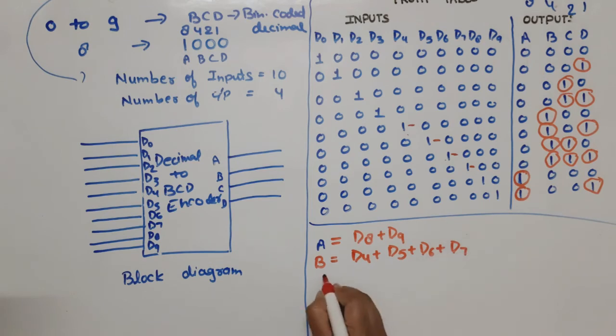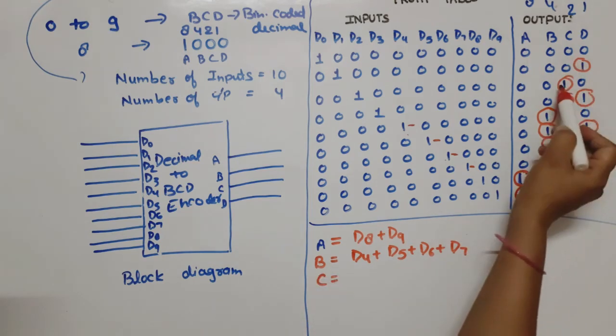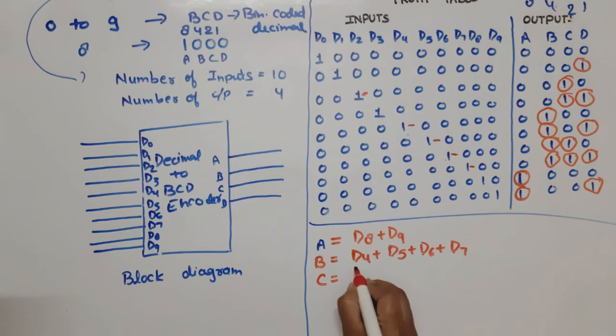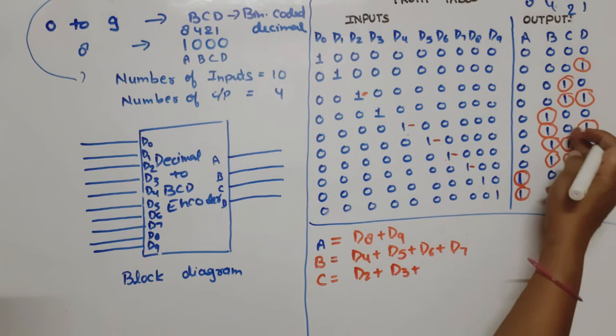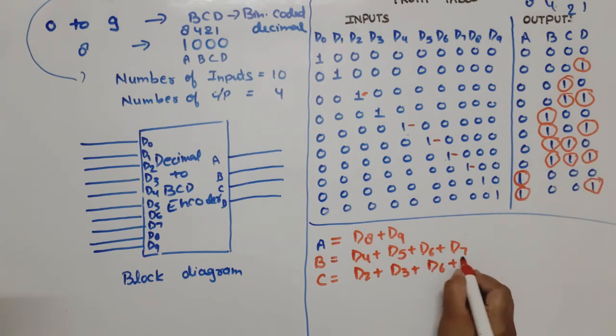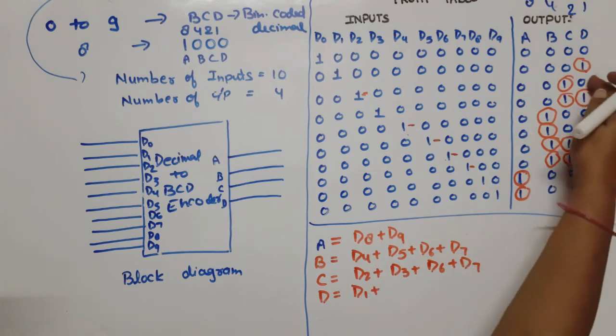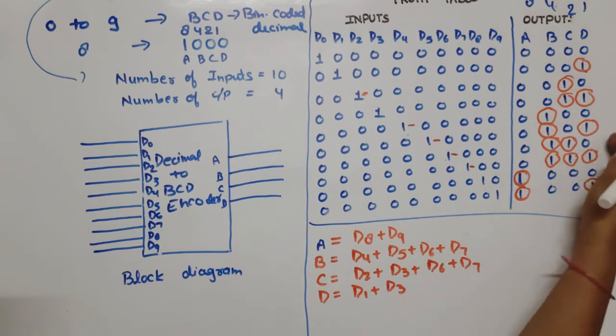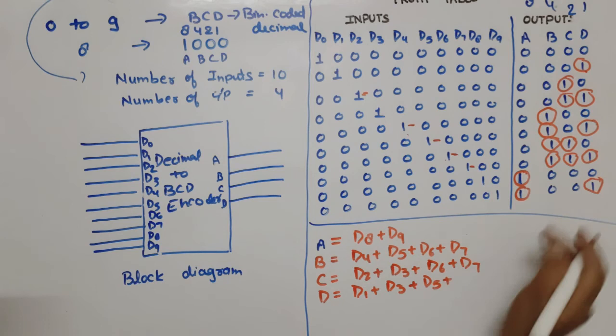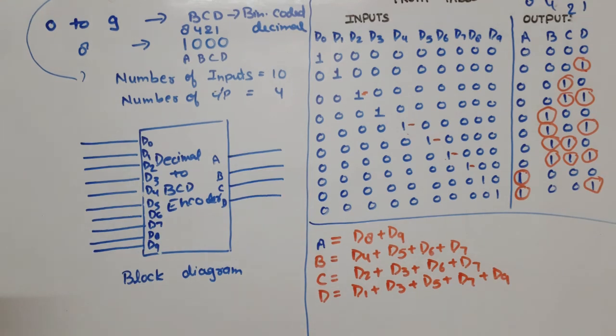Now for C, C is high at D2, D3, D6, D7. So C equals D2 plus D3 plus D6 plus D7. Now for D, D is high at D1, D3, D5, D7, D9. So D equals D1 plus D3 plus D5 plus D7 plus D9. These are the output equations for decimal to BCD encoder.